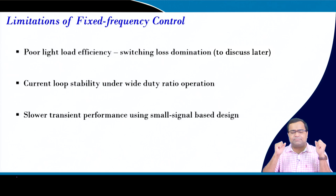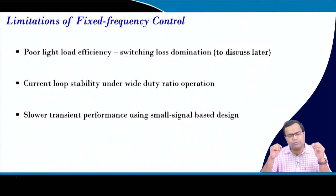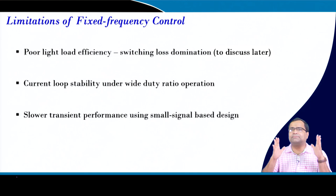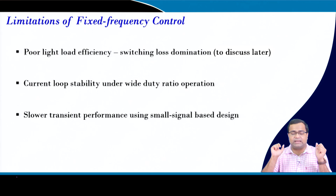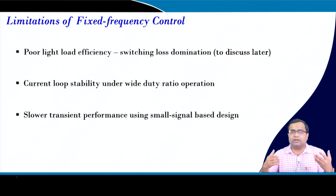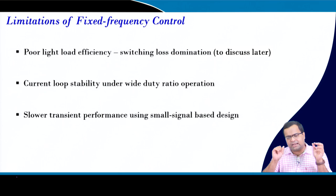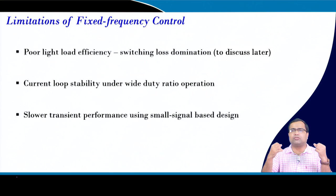Then there is the slow transient performance in most commercial products. Fixed frequency voltage mode or current mode control still uses small signal models - we derive transfer functions, gain crossover frequency, phase crossover frequency, and design compensators based on frequency response. Such small signal models are not valid when we try to go beyond a certain bandwidth, and simulation will show the response from the small signal model and the actual switching converter start diverging when you increase the crossover frequency.